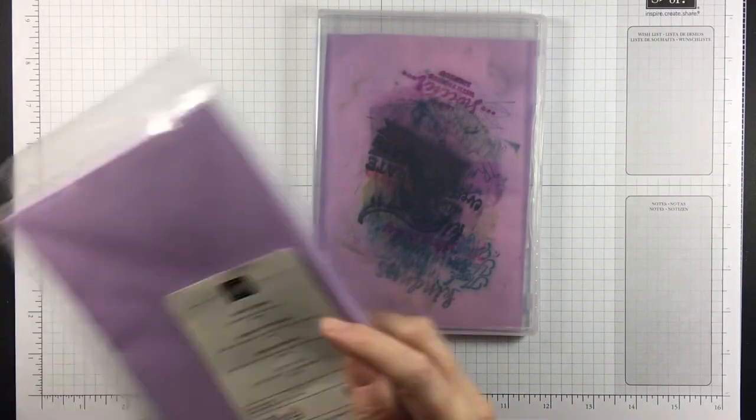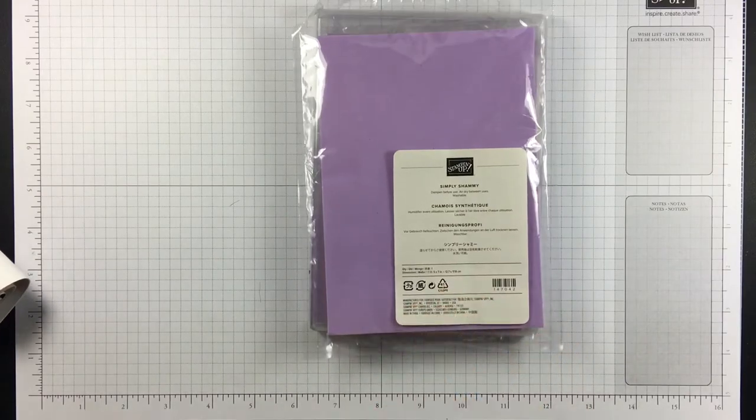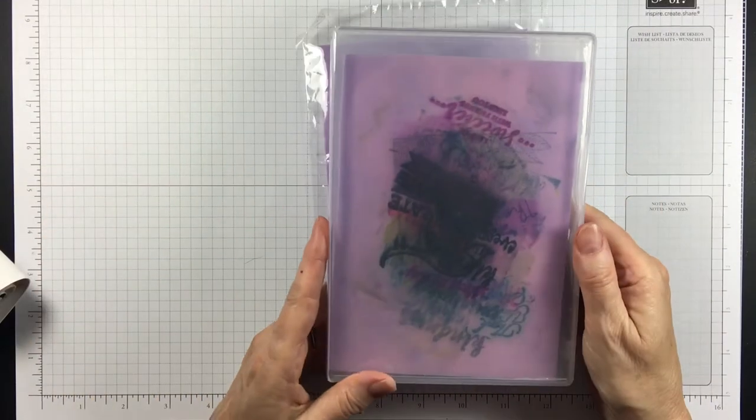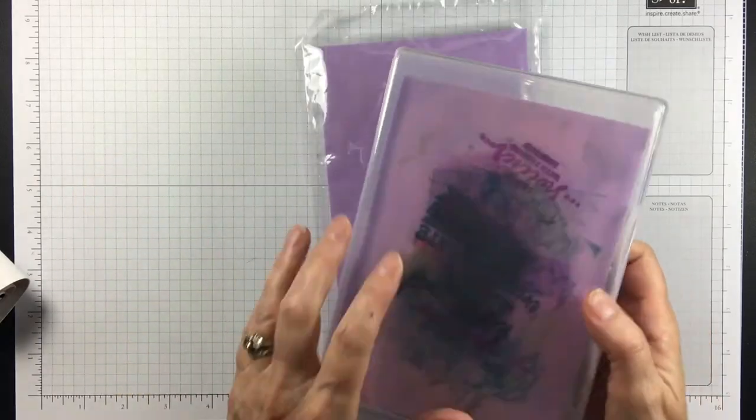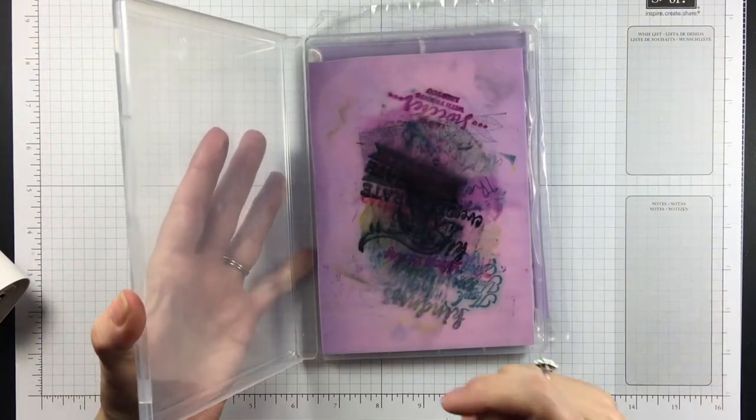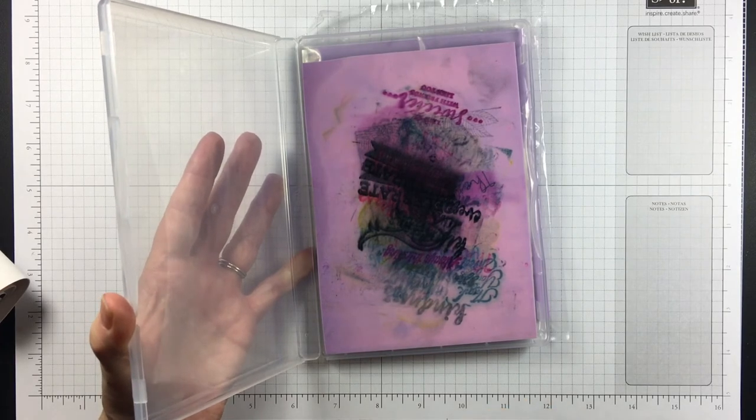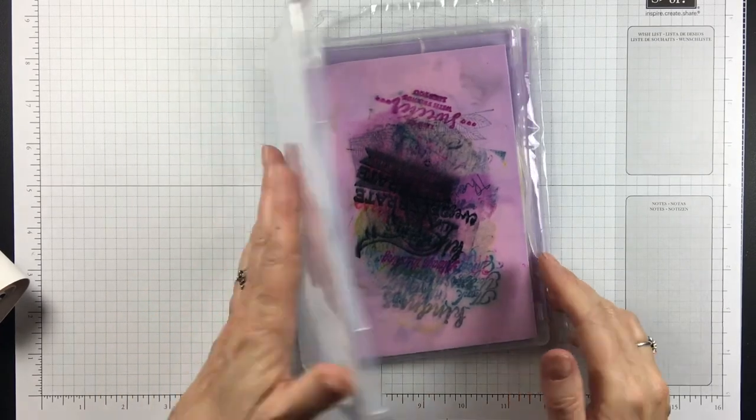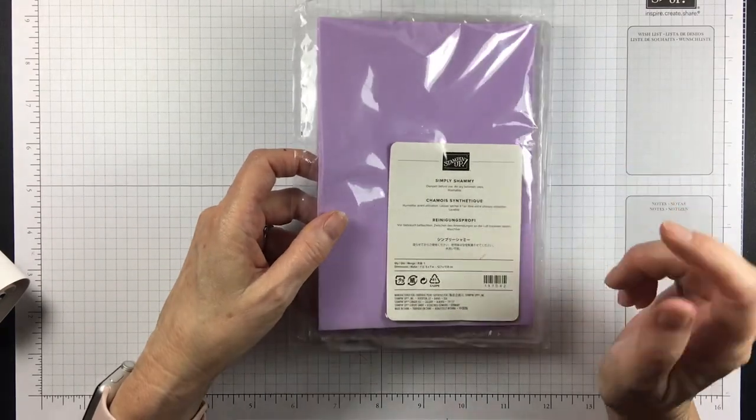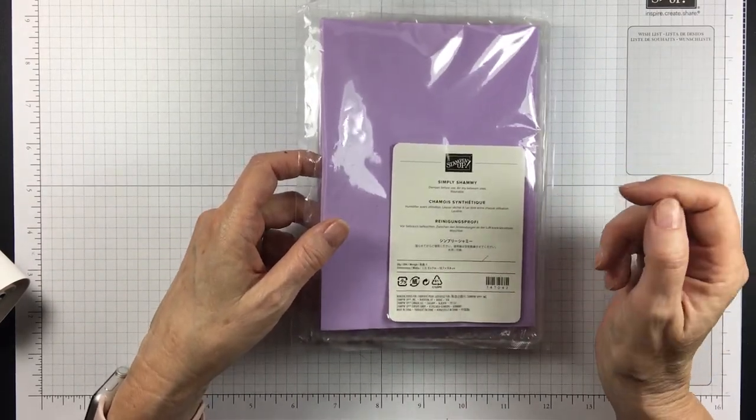So what I love about the Simply Chamois is that it just makes it so easy to clean my stamps. I keep this out on my desk all the time now. I just grab it, clean my stamps, and I actually put them away. I clean them and immediately put them away, which is big for me. So this Simply Chamois is also helping me to become more organized.